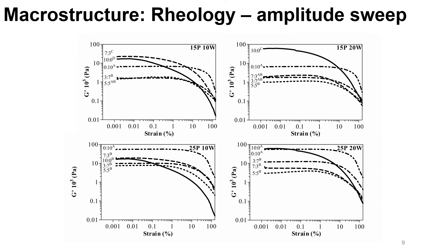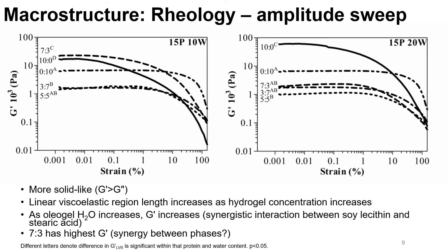Moving into our macro structure, we conducted rheology. We began with an amplitude sweep, with strain on the x-axis and storage modulus on the y. On the left are our gels at 15% protein and 10% water, and on the right at 15% protein and 20% water. Our storage modulus was greater than the loss modulus, indicating solid-like behavior. Furthermore, our pure oleogel had quite a low critical strain, whereas the gels with more hydrogel phase present had a higher critical strain. As hydrogel content increased, the length of our linear viscoelastic region likewise increased. This is a major advantage of using a bi-gel over a pure oleogel because the structure is not as shear sensitive.